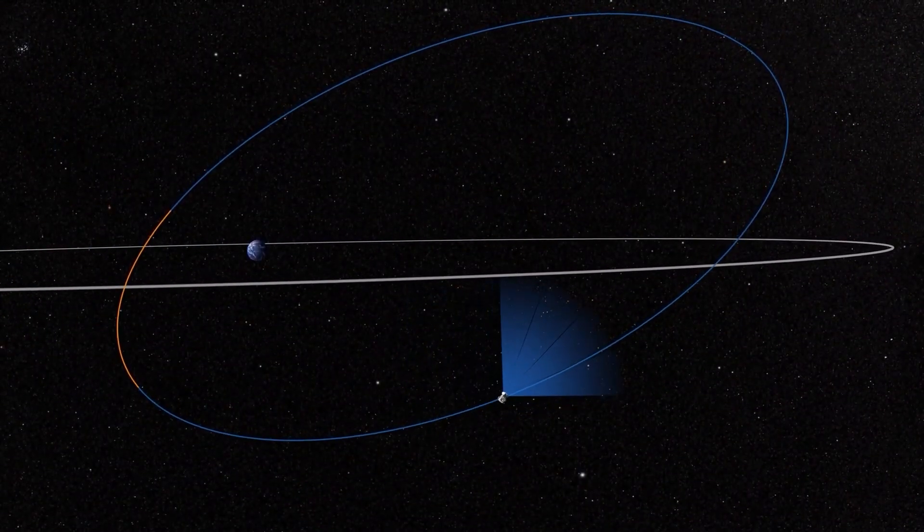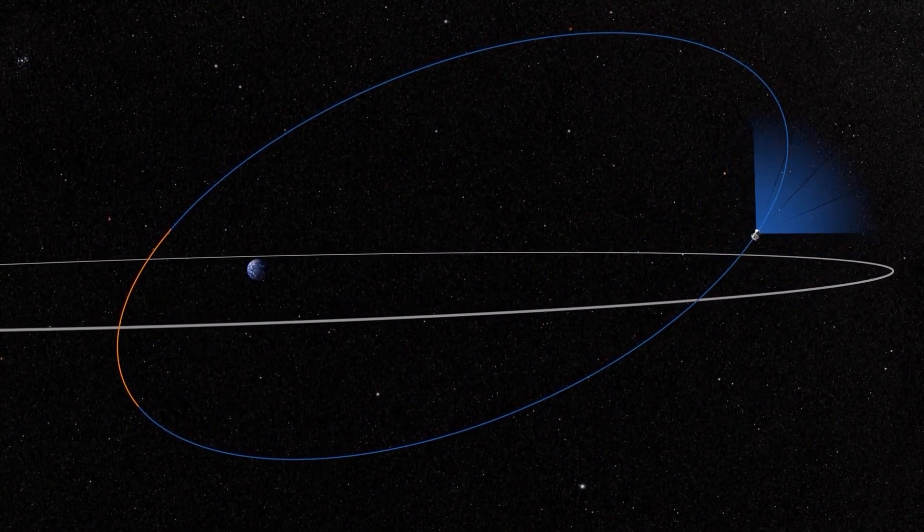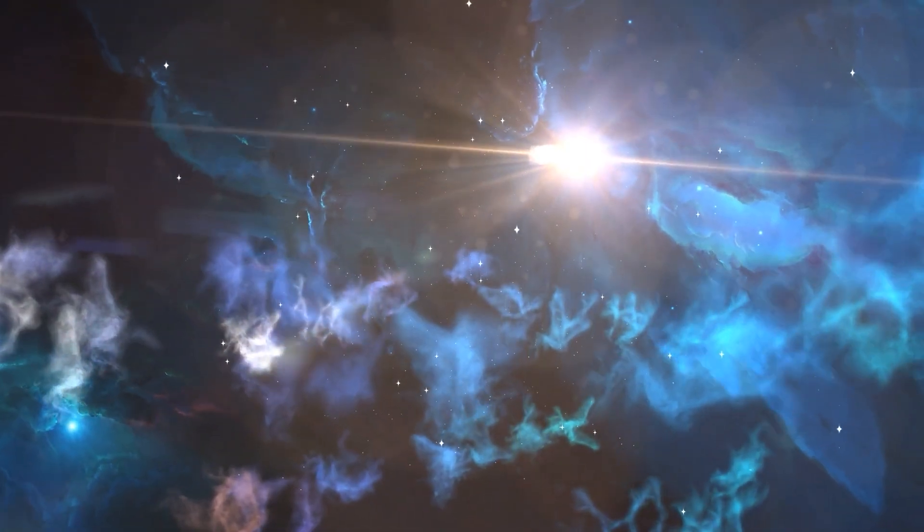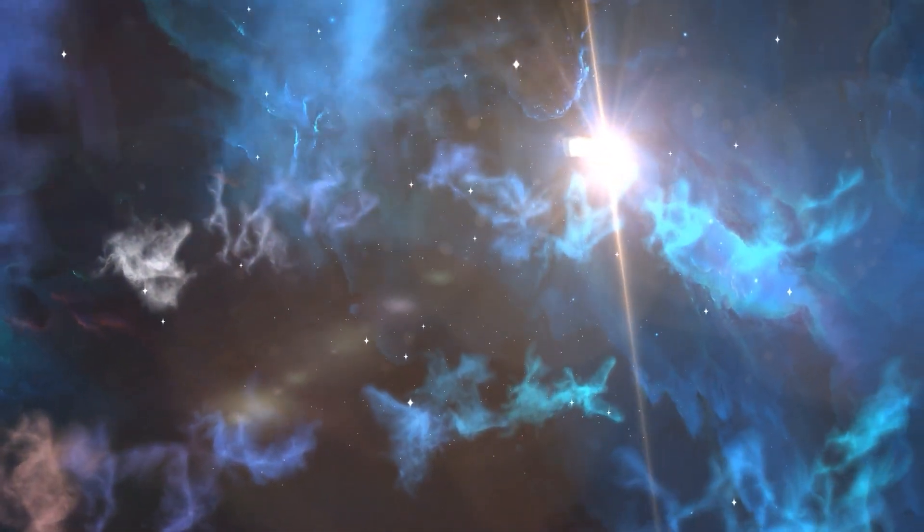Proxima b is 20 times farther away from its host star than the Earth from the Sun. According to observations, the exoplanet is tidally locked, having a perpetual day side and night side.